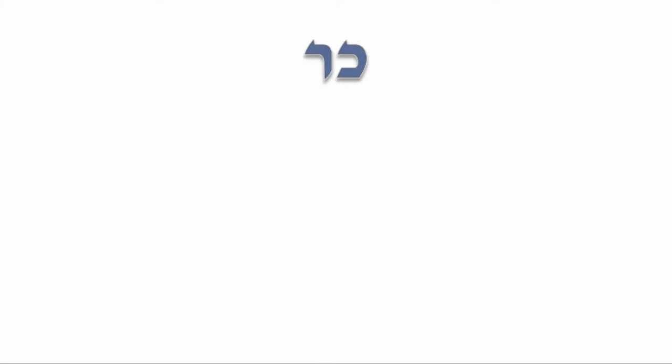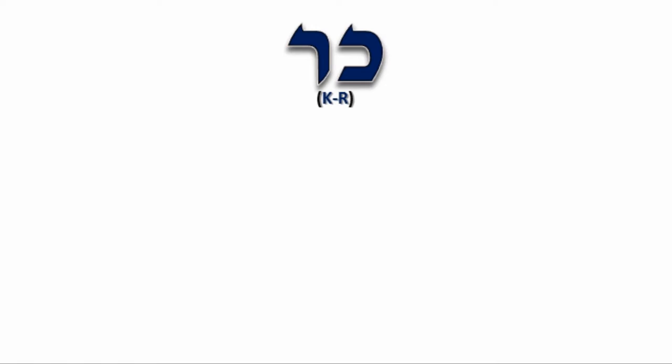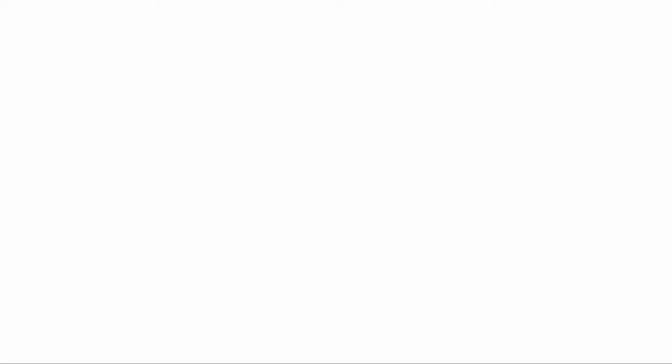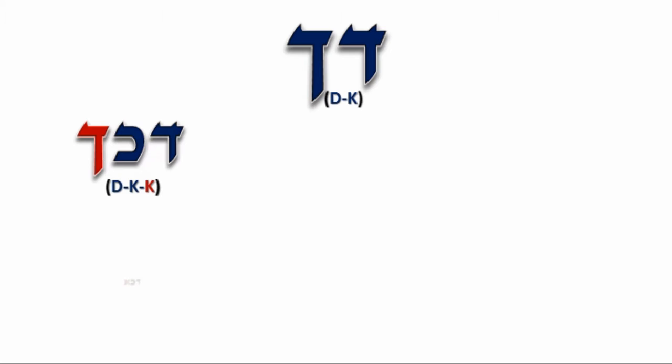The biliteral root Kar is the root of these four triliteral roots, each being related to the idea of digging. Another example he provides is the biliteral root dak, and these four triliteral roots are related to the idea of striking or breaking.